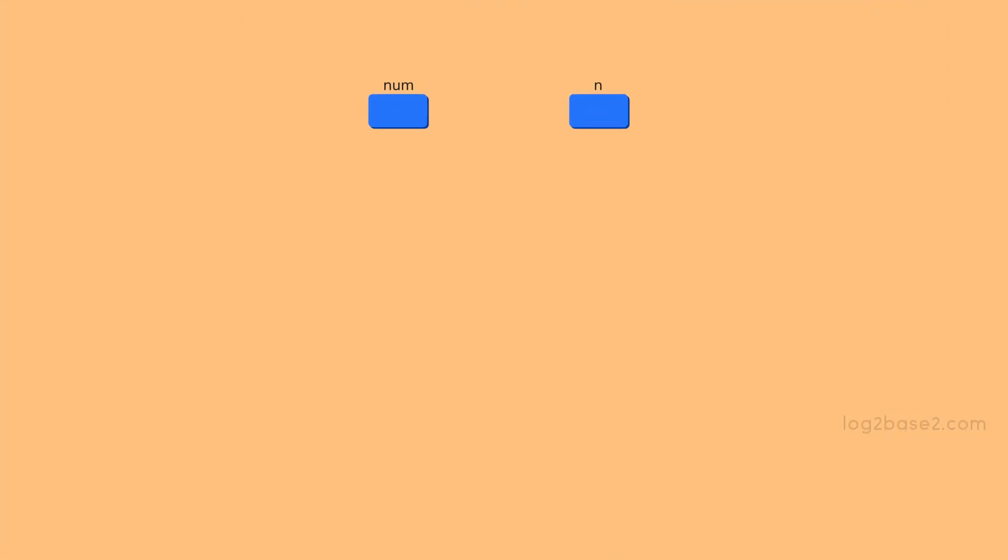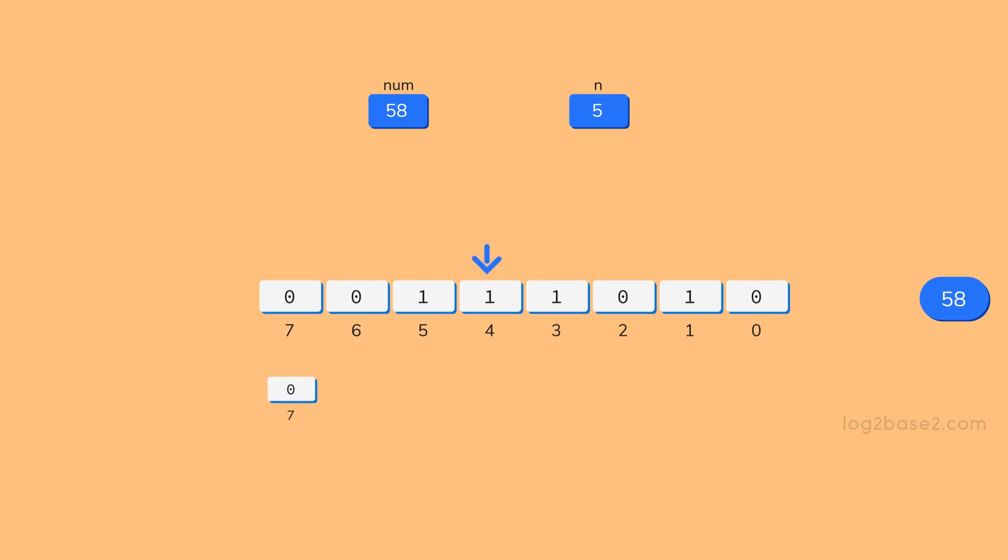So let us take an example. Here the number is 58 and we are going to disable the 5th bit. First, let us create a bit mask with the 5th bit alone set to 0 and the remaining bits set to 1.